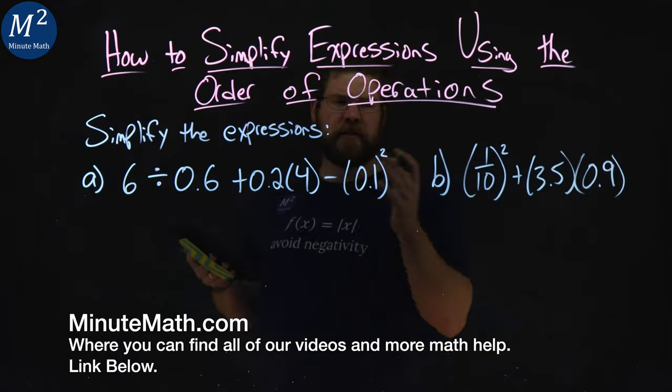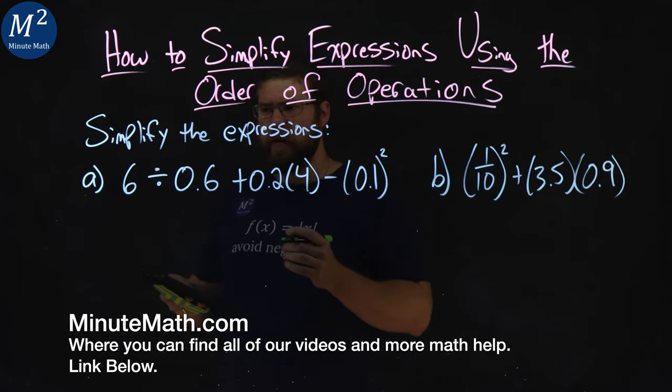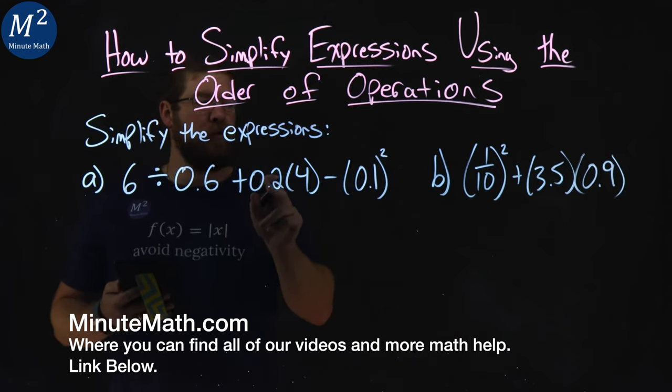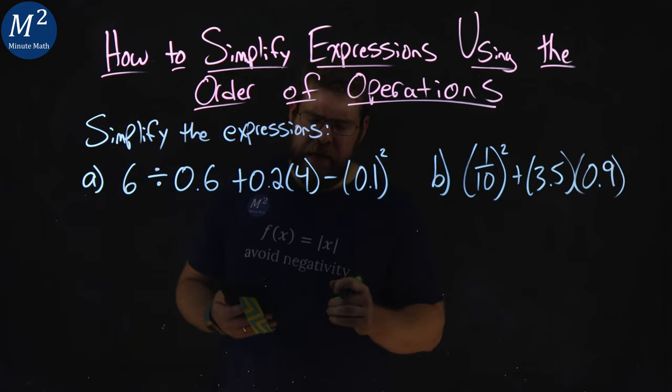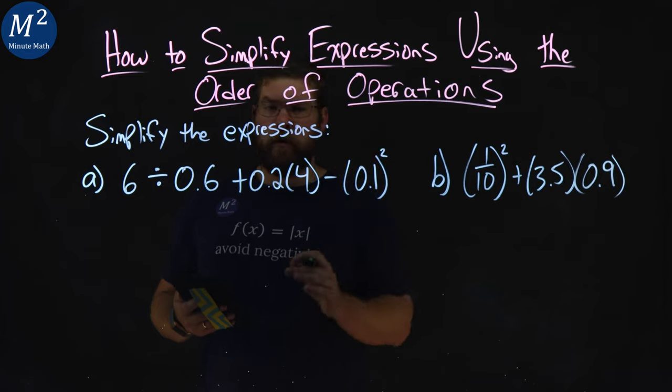We're given two expressions to simplify. Our first one, 6 divided by 0.6 plus 0.2 times 4 minus 0.1 all squared. We gotta simplify this using the order of operations.